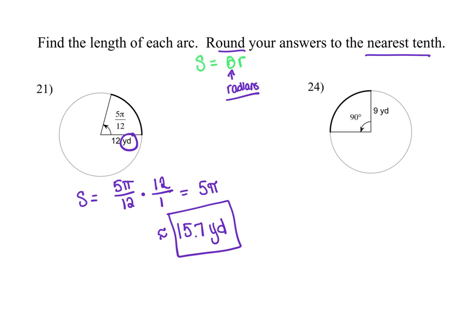For the number 24, again, they have given me my theta, but they have given it to me in degrees. So I am going to multiply my theta times my radius, but I do need to multiply it by π over 180 to convert it to radians. And then I can multiply it by my radius.